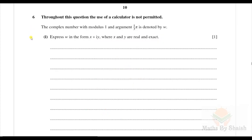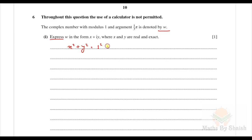Let's do question number 6. Throughout this question the use of a calculator is not permitted. A complex number with modulus 1 and argument π/3 is denoted by w. Express w in the form x + iy where x and y are real and exact. Let w = x + iy, so the modulus is √(x² + y²) = 1, giving x² + y² = 1.